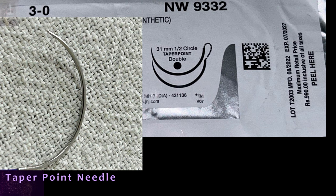There are two needles — that means this suture is double-armed, with a needle on both ends. The length of the needle is 31 mm and it is a half circle.